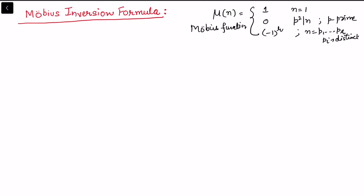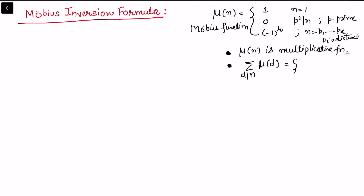As established in the previous video, the Möbius function μ(n) is a multiplicative function. We also have the result that the summation of μ(d) over all d dividing n equals 1 if n equals 1, and 0 in all other circumstances. We will now use these two results and the definition of the Möbius function to prove the Möbius inversion formula.